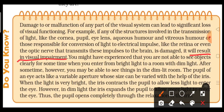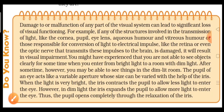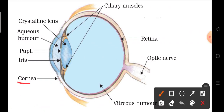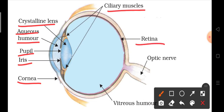Now, what are those structures? Let me show on the diagram. The parts are: first, cornea; iris; pupil; aqueous humor; eye lens, also called crystalline lens, which is a convex lens; ciliary muscles; retina; optic nerve; and vitreous humor.